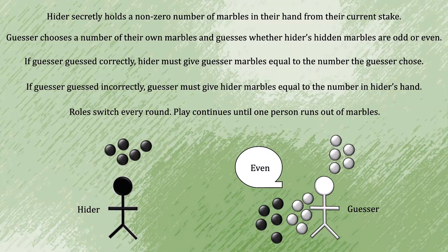On the other hand, if the guesser had chosen even, then the guess would be incorrect because the hider had three marbles in their hand. And so not only does the hider get to keep all of their marbles under that circumstance, they also win a number of marbles equal to what they were hiding, which in this case was three. And so the guesser must give them that number.